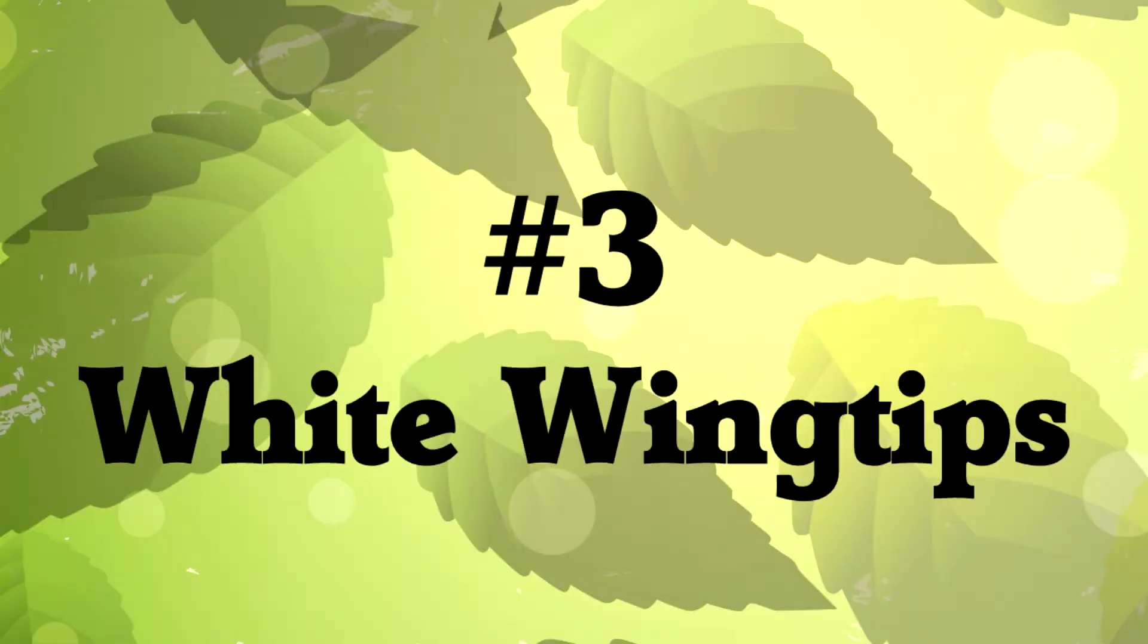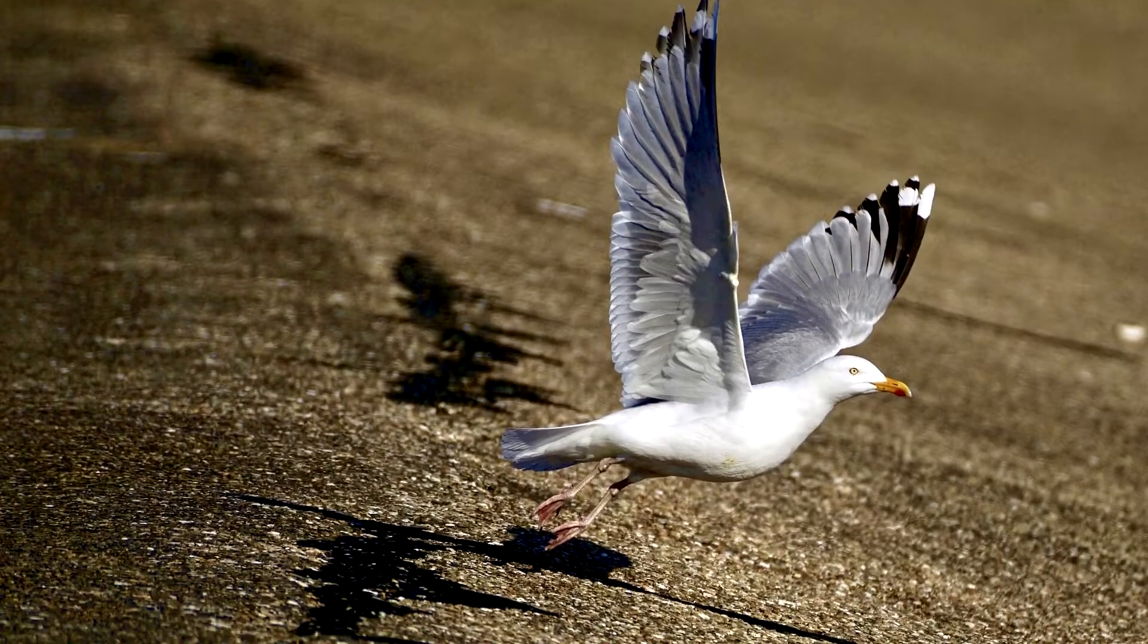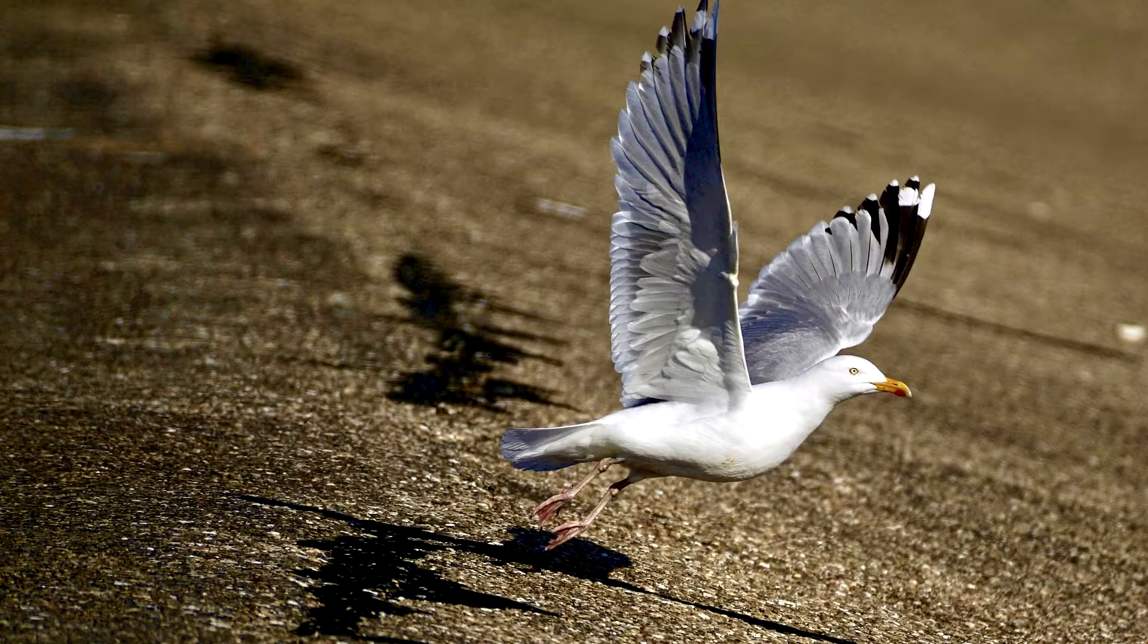Number 3, white wingtips. This is not a fancy pair of shoes. This is an actual way to get away from predators. As a bird takes off, you might notice that it has small white feathers on its wingtips or on the tips of its tail. This is no accident.